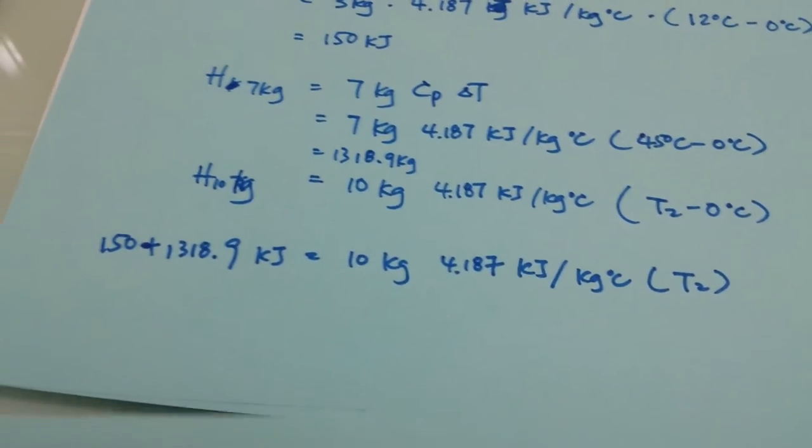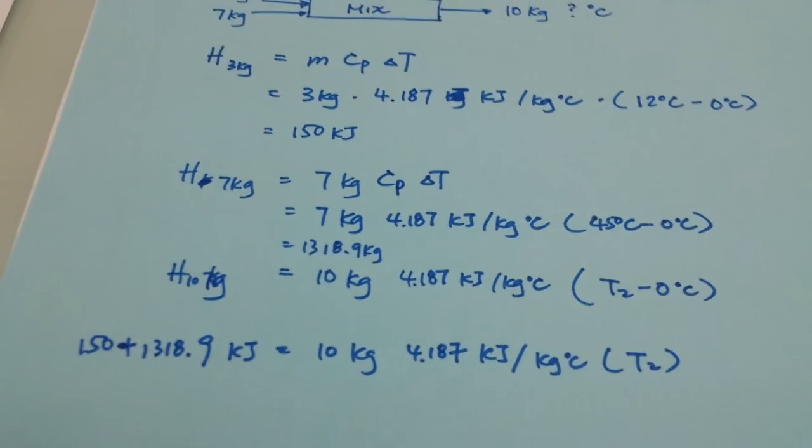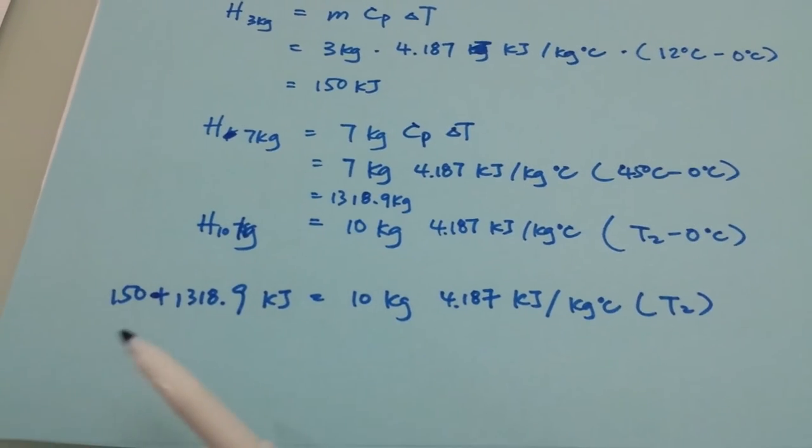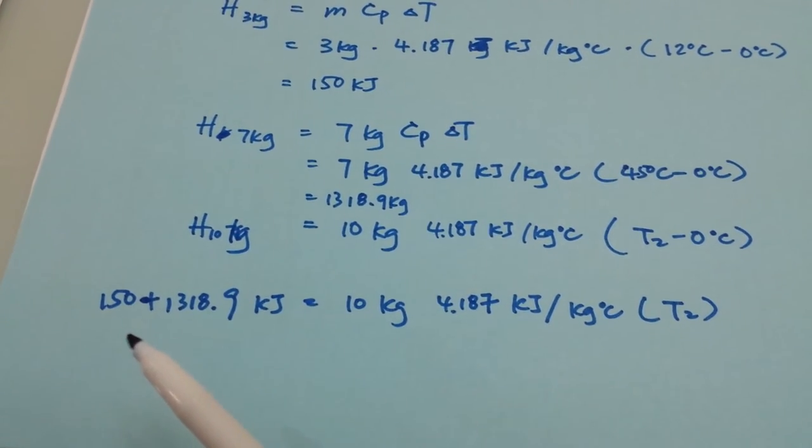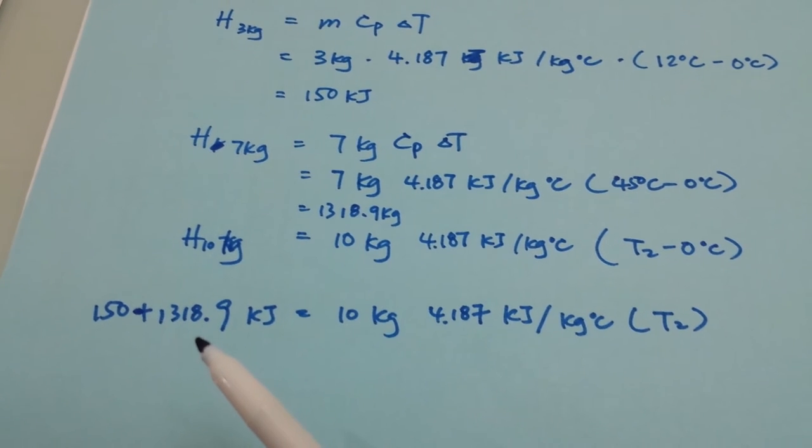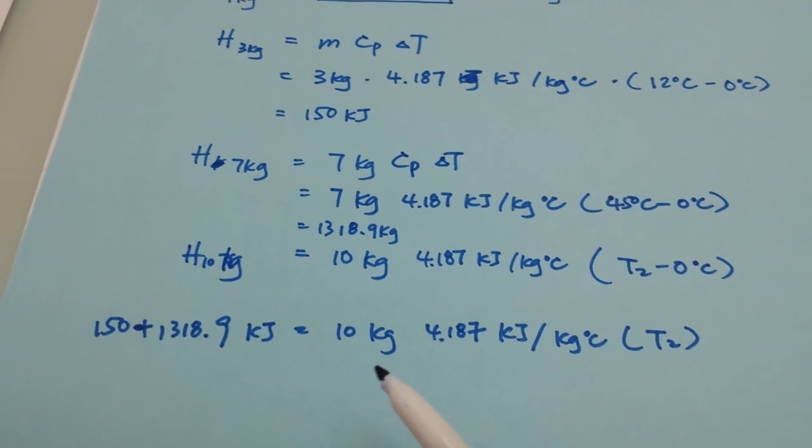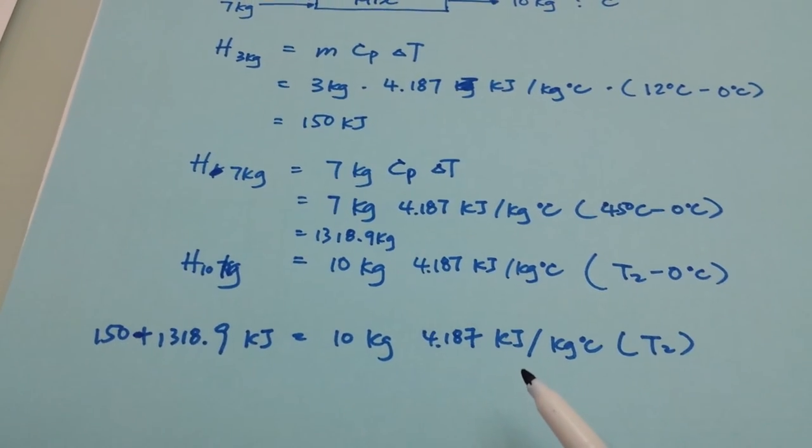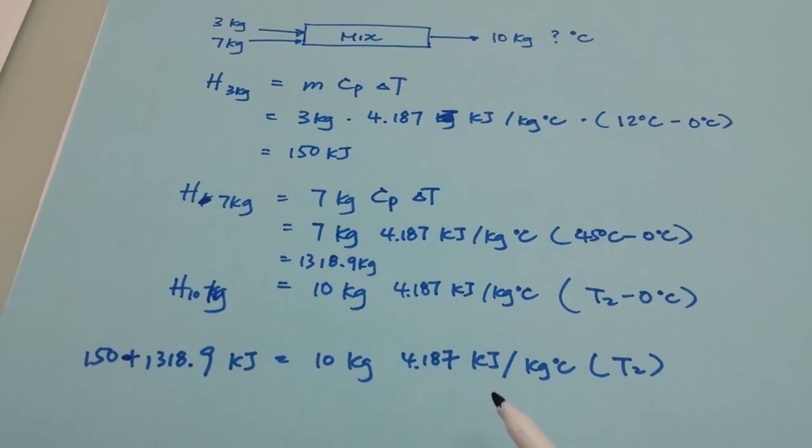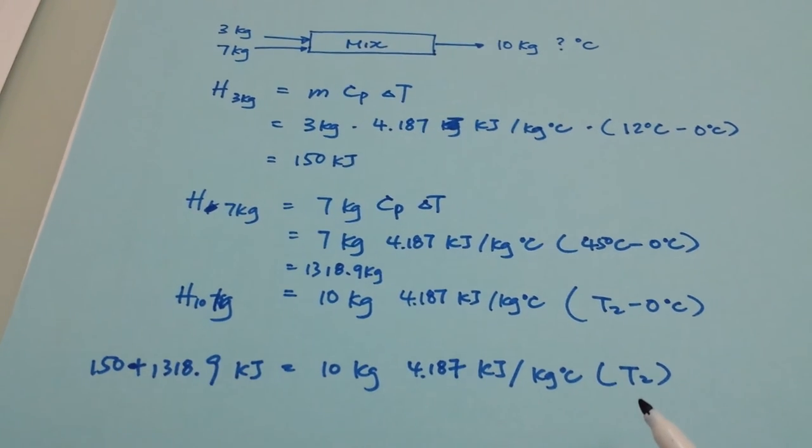I would like to show you this last equation here, that I am adding the 3 kg of water enthalpy plus the 7 kg of water. 10 is the final weight, final mass, with the same heat capacity that we have seen before, and finding out the final temperature.